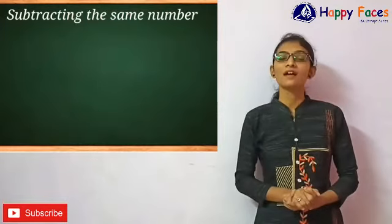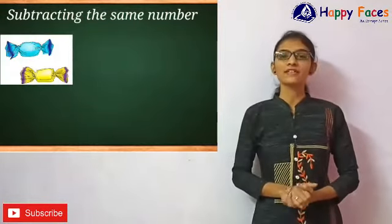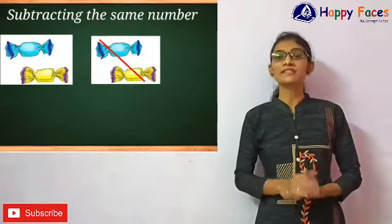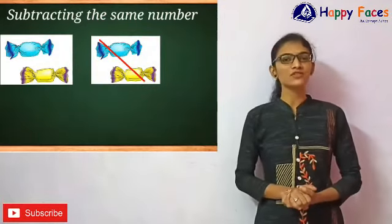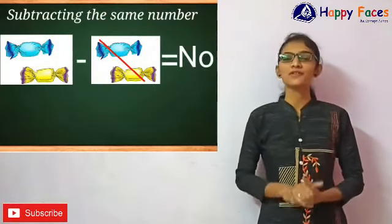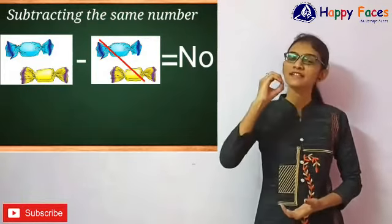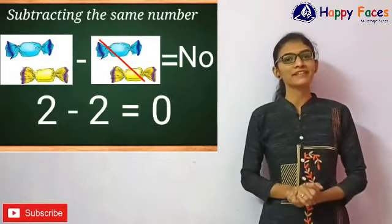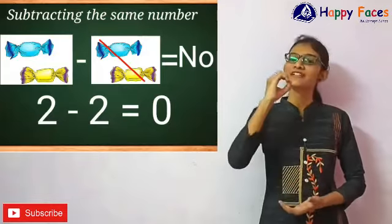If you have two chocolates and you take away two chocolates, do you have any chocolates? No, the answer will be 0. So 2 minus 2 equals 0.